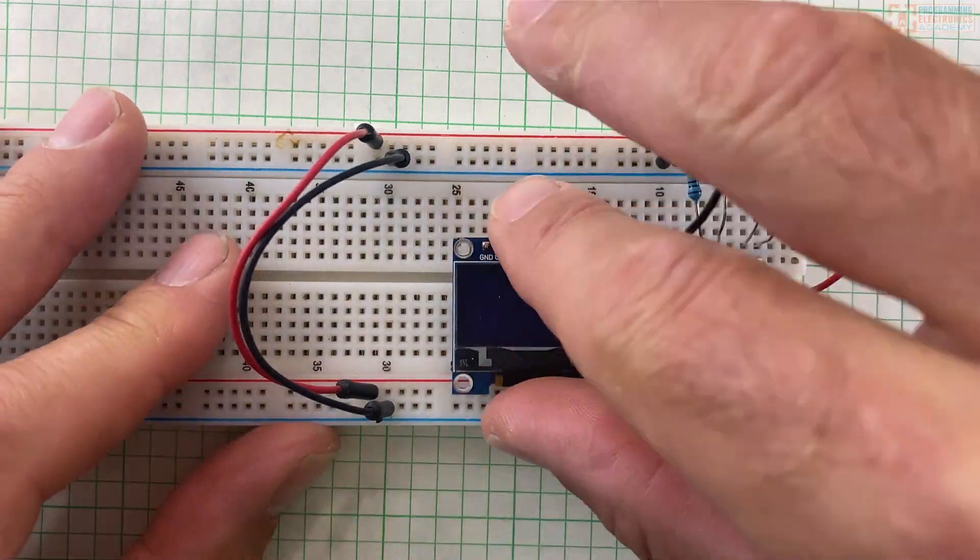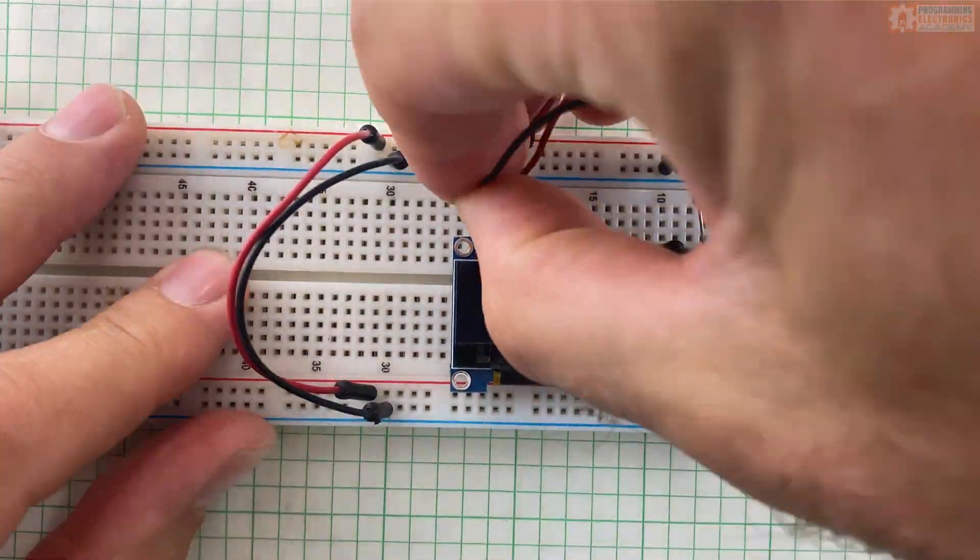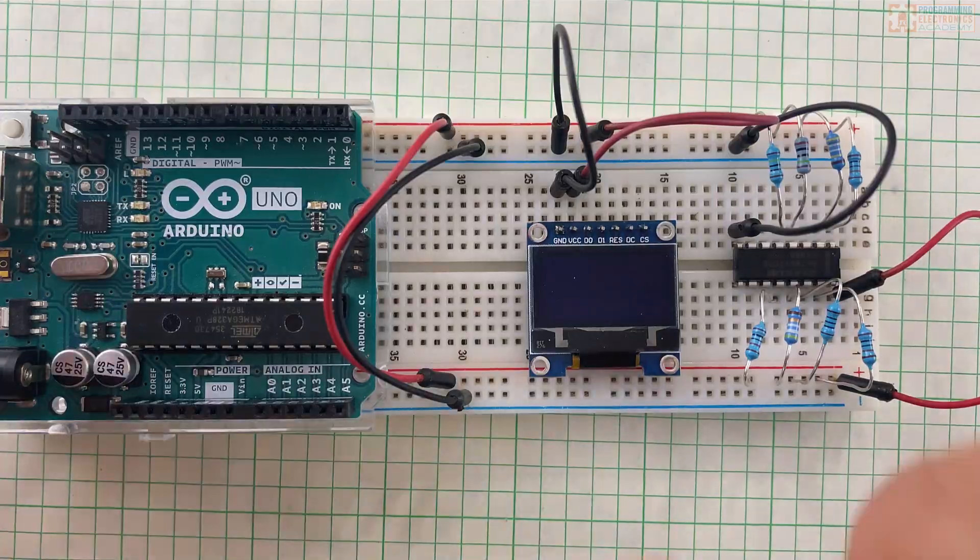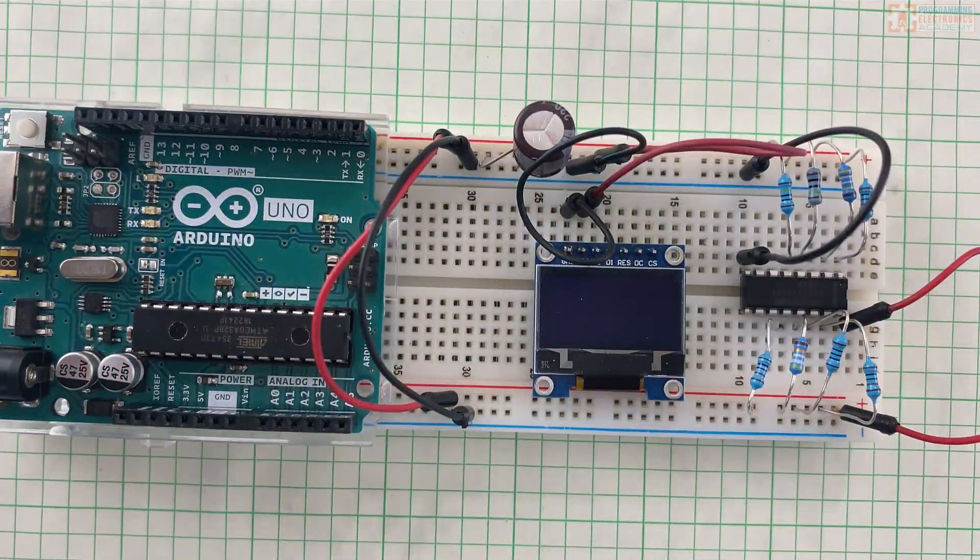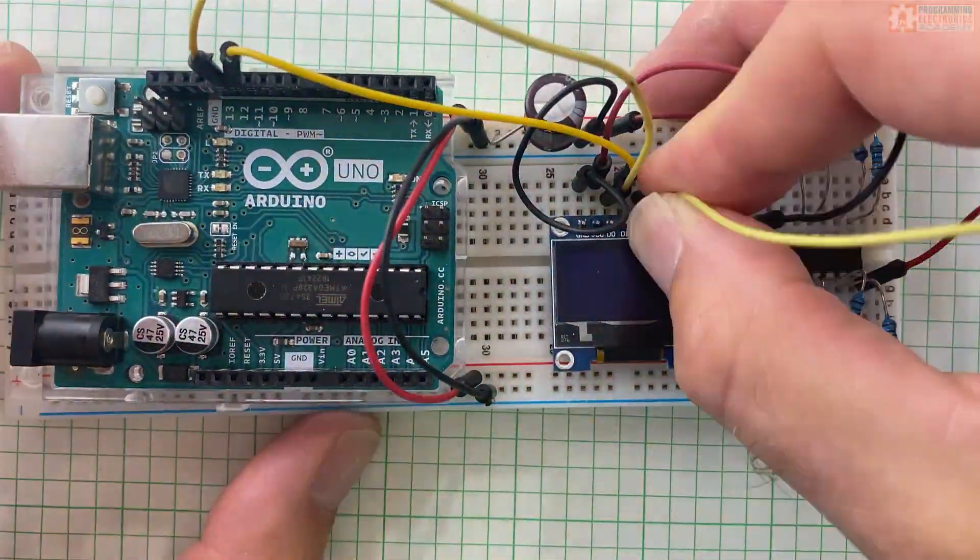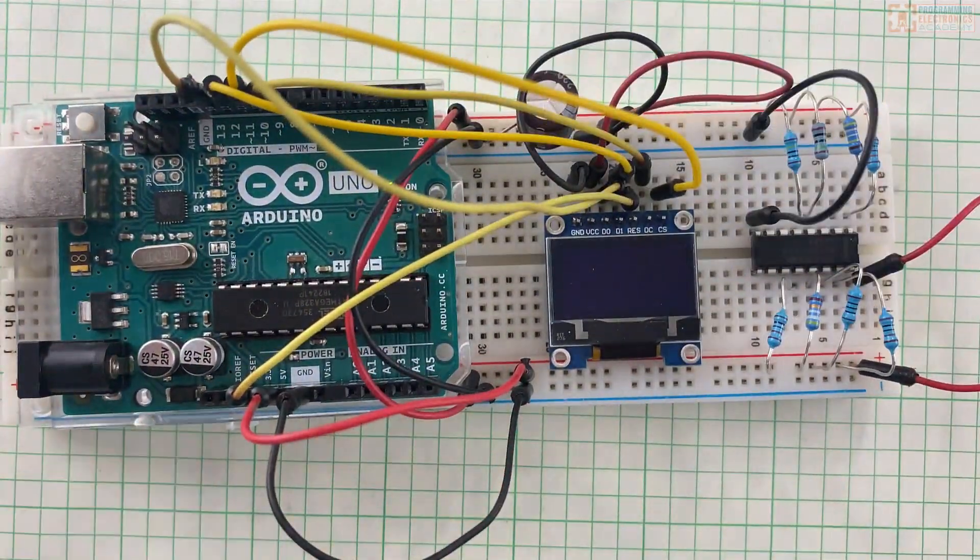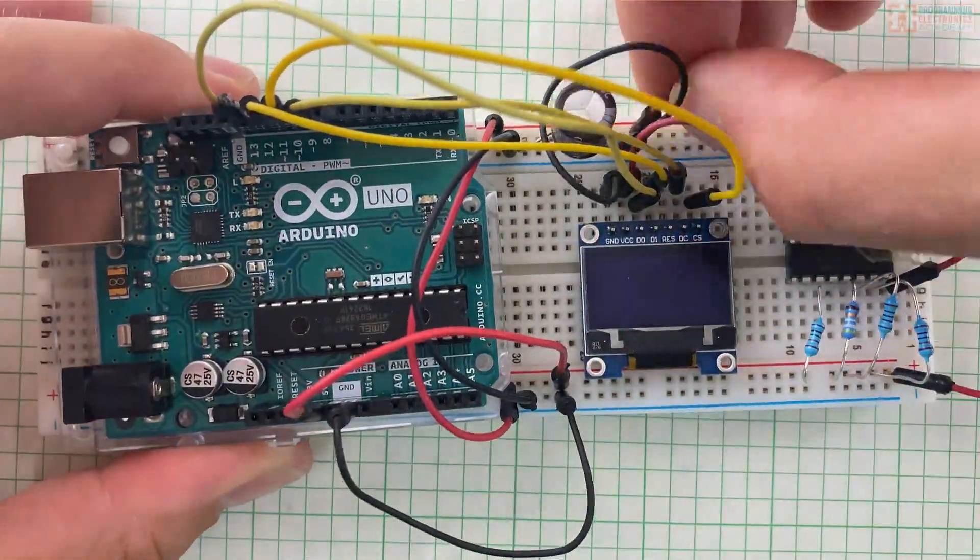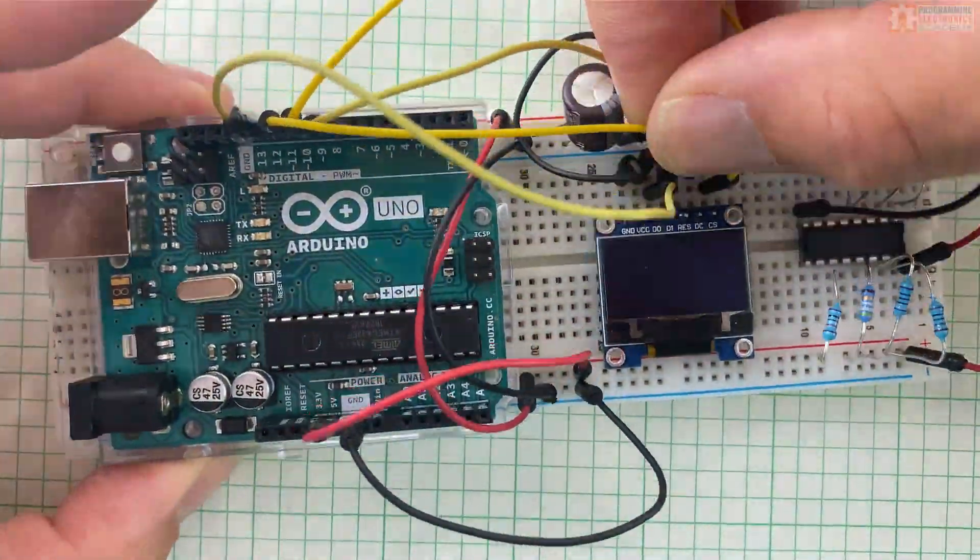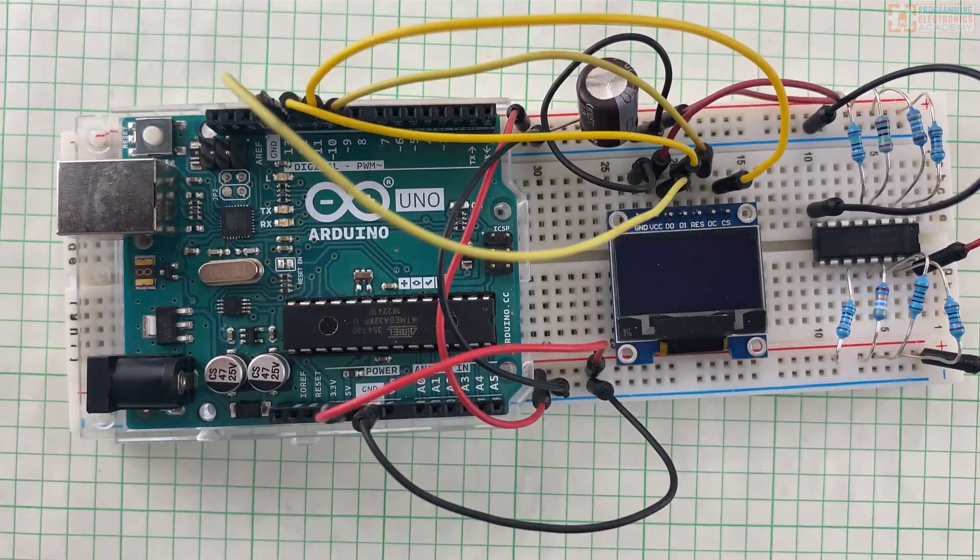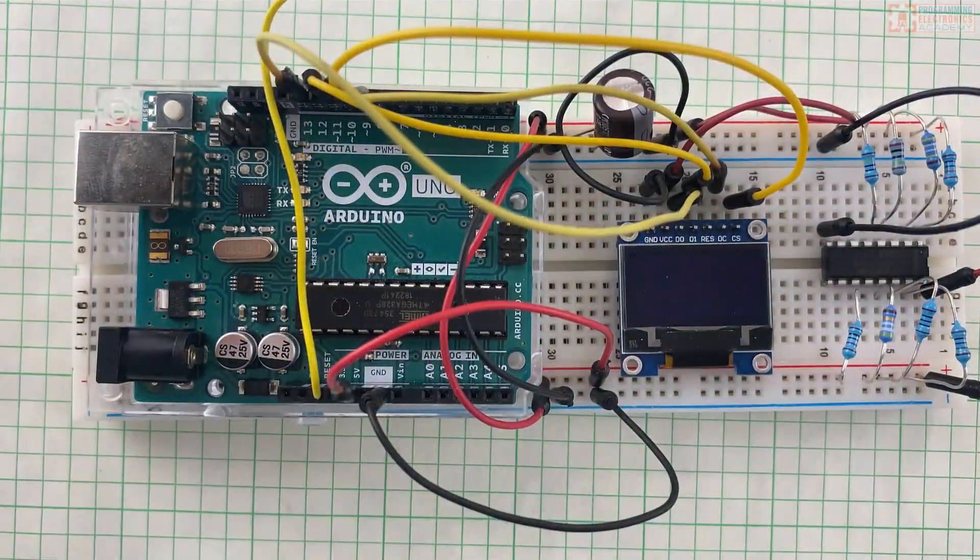The next thing I add is an SPI OLED display, which will be used to display the resistance value that we measure with the ohmmeter. I also add a 220 microfarad 16-volt electrolytic capacitor for filtering out noise in the 5-volt VCC line. I then start making the connections between the Arduino and the OLED display and the breadboard and the power and ground lines.